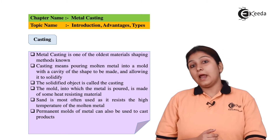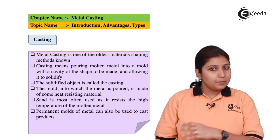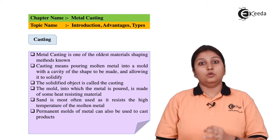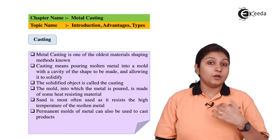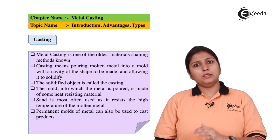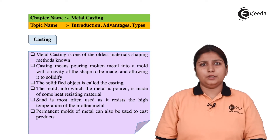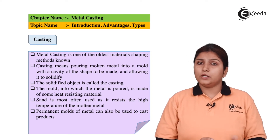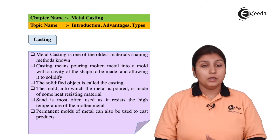That prepared sand is added into the pattern, whose shape is already made. The molten metal is then poured into the pattern — it occupies the space, it solidifies, and then the basic cleaning and removing process takes place. This is the basic process of casting. We are going to see the advantages, disadvantages, and applications of this casting process.